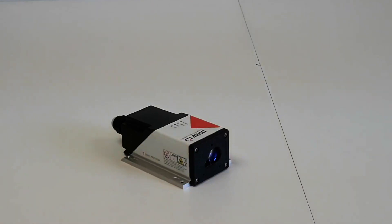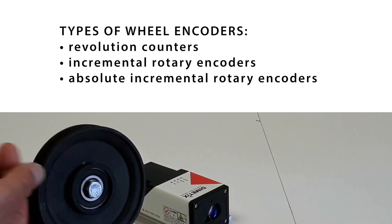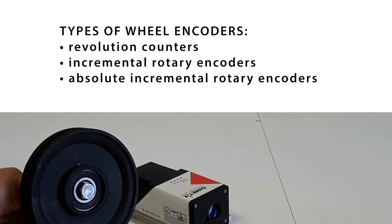Typically wheel encoders can be of various types. Common forms are revolution counters, incremental rotor encoders, and absolute incremental rotor encoders.